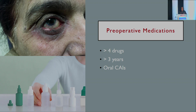Preoperative medications can wreak havoc on the eye. Anybody taking more than four drugs, or taking multiple medications for over three years, or those who have been on oral carbonic anhydrase inhibitors, are more likely to have a bad course after trabeculectomy. We really need to be more watchful for fibrosis in the early postoperative period in such patients.